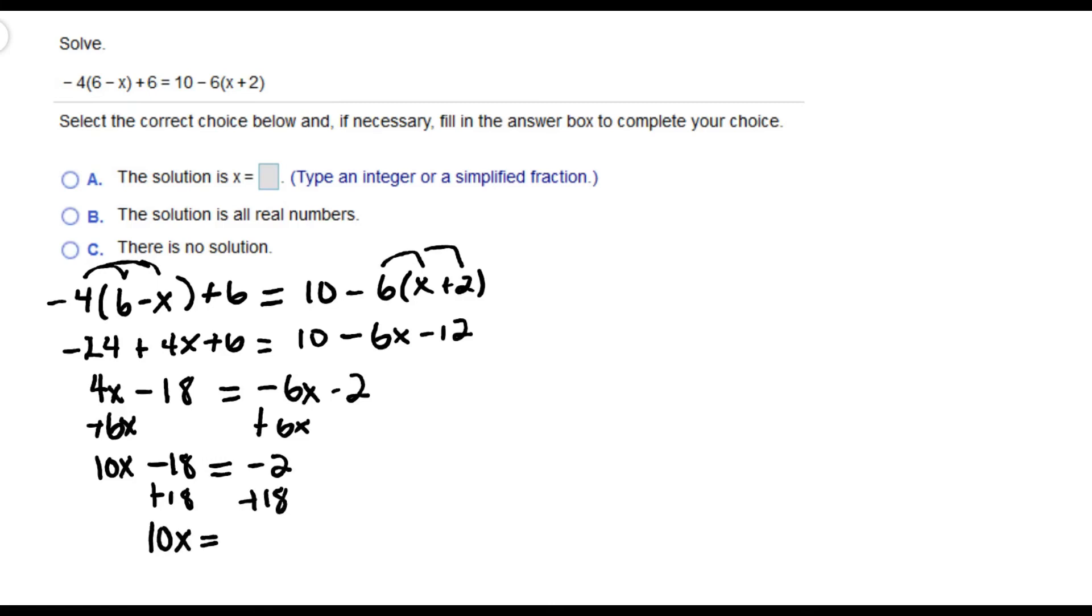That gives me 10x equals 16. Divide both sides by 10. I can reduce 16 over 10 to be 8 over 5.